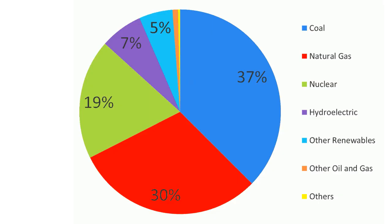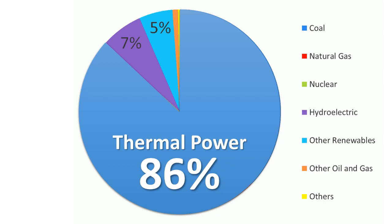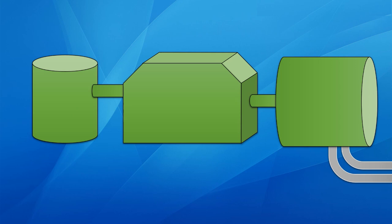There are very different types of energy — coal, natural gas, nuclear, hydroelectric, non-renewables, renewables, oil, gas, and others. But what's interesting is that about 86% of those is what we call thermal power. So the question now is: what is thermal power? Thermal power is a really remarkable and quite simple way of producing power.